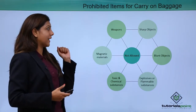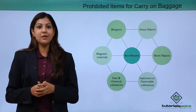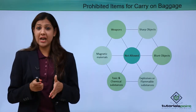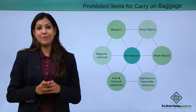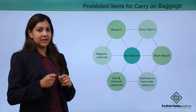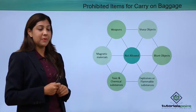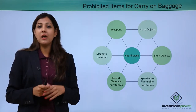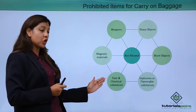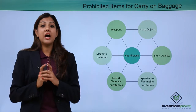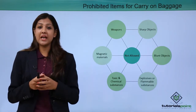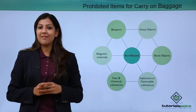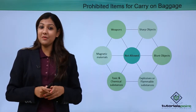Prohibited items not allowed in carry-on baggage include: any kind of weapon — knife, bomb, revolver, or pistol. Even toy weapons, such as a toy gun a child may be carrying, will be confiscated. Sharp objects like knives and nail cutters are not allowed. Blunt objects that can hurt passengers, explosives or flammable substances, toxic or chemical substances like paint or aerosol, and magnetic materials are all prohibited as they can endanger other passengers on board.